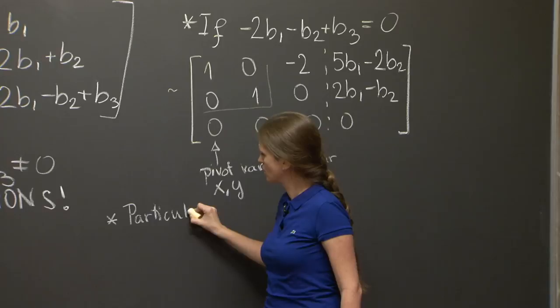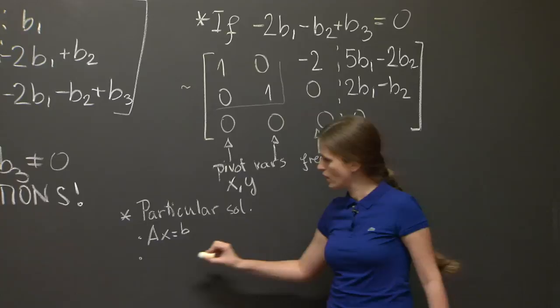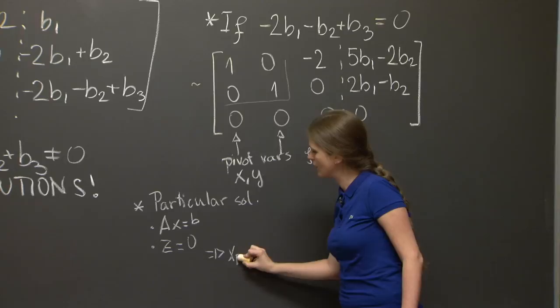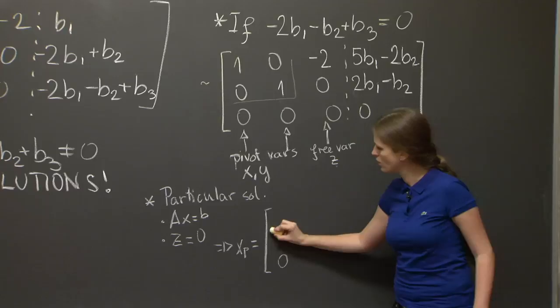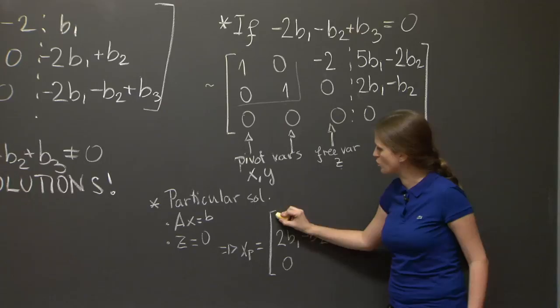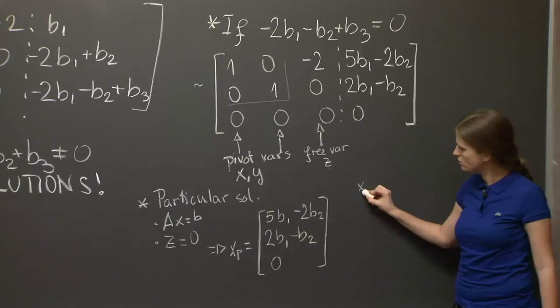We have two kinds of solution. One kind is the particular solution. This one solves Ax equals b. There's only one of them, and we get it by setting the free variable equal to 0. Setting the free variable equal to 0, this is equal to 0. The second equation says y equals this thing here, so 2 b1 minus b2. And the first equation says x minus 2 times 0 equals this expression here, so 5 b1 minus 2 b2. That's our particular solution.